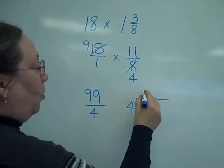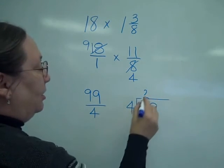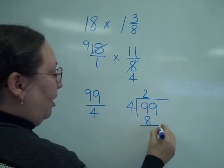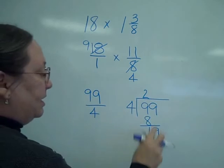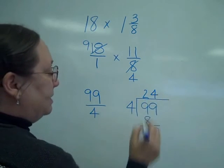4 goes into 9, twice. 2 times 4 is 8. Subtracting, 1 left over. Bring down the 9.